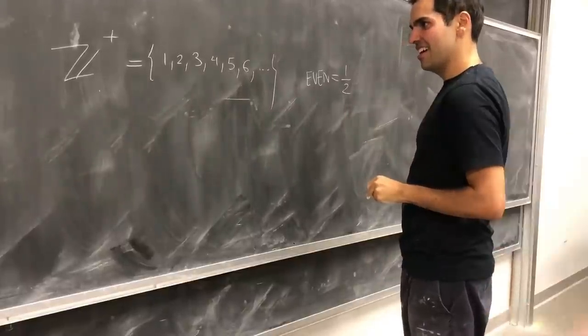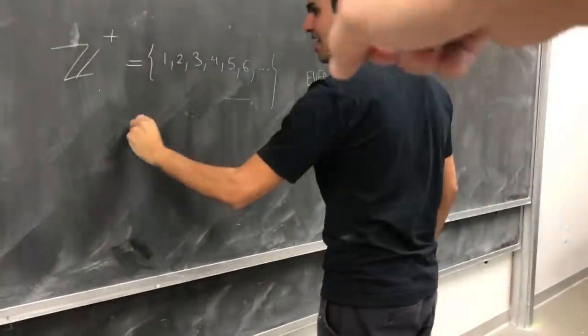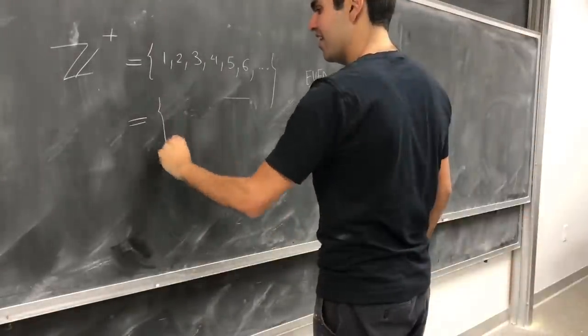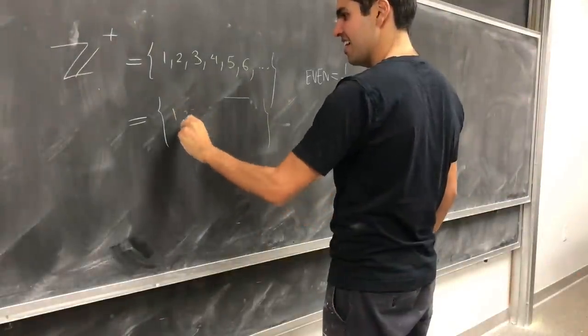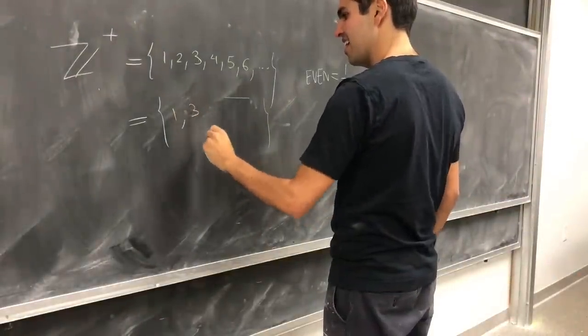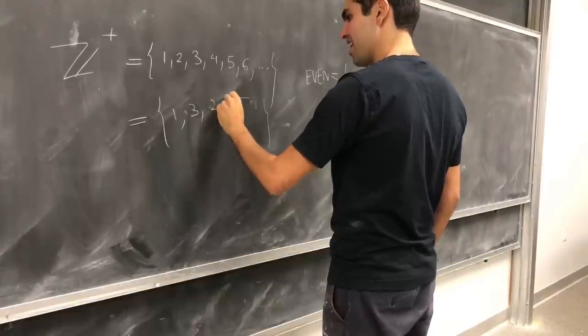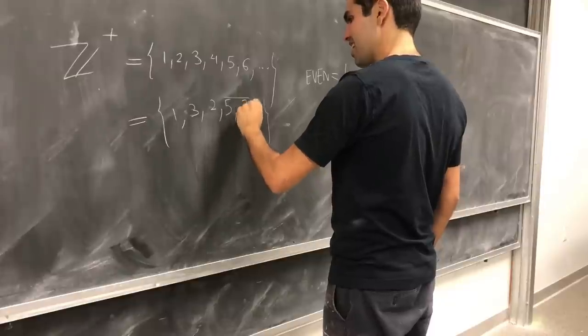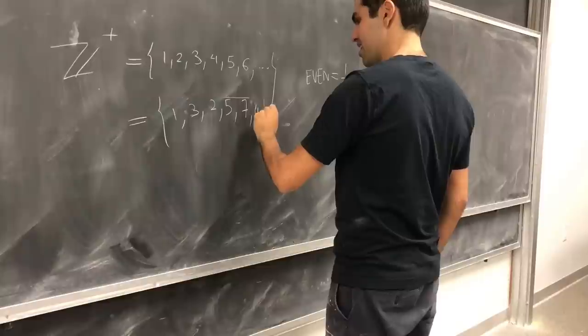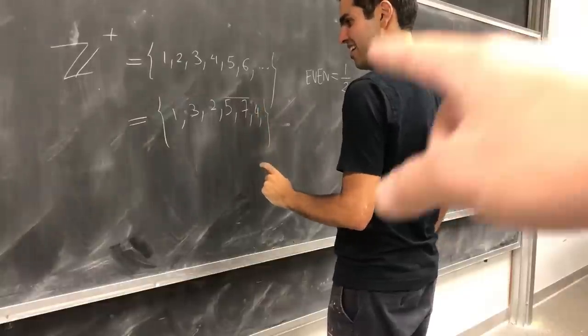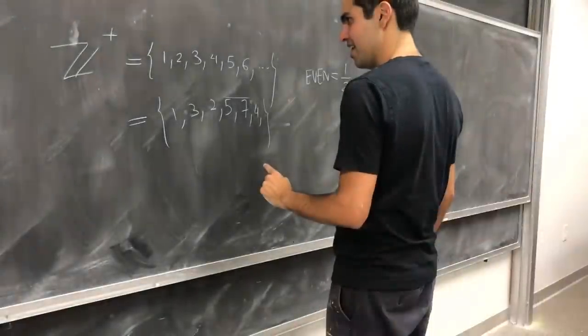And now, next line, put on equal sign. No, over there, over there. Put on equal sign, and then the set. Set notation. Okay. Now let's write this down. One, comma, three, comma, two, comma, five, comma, seven, comma, four, comma, dot, dot, dot. Got it. And now, would you agree with me that that's a set of all the positive integers?